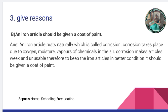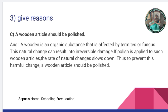C: a wooden article should be polished. Wood is an organic substance that is affected by termites. This natural change can result in irreversible damage. If polish is applied to such wooden articles, the rate of natural change slows down. Thus, to prevent this harmful change, a wooden article should be polished.